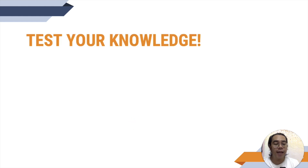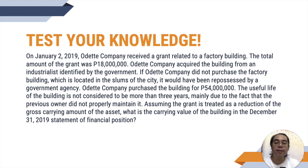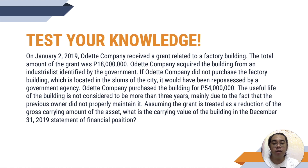That's it for government grants. Now it's your time to test your knowledge. On January 2, 2019, Odette Company received a grant related to a factory building; the total amount of the grant was $18,000,000. Odette Company acquired the building from an industrialist identified by the government — if Odette Company did not purchase the factory building, which is located in the slums of the city, it would have been repossessed by a government agency. Odette Company purchased the building for $54,000,000; the useful life of the building is not considered to be more than 3 years, mainly due to the fact that the previous owner did not properly maintain it. Assuming the grant is treated as a reduction of the gross carrying amount of the asset, what is the carrying value of the building in the December 31, 2019 statement of financial position?